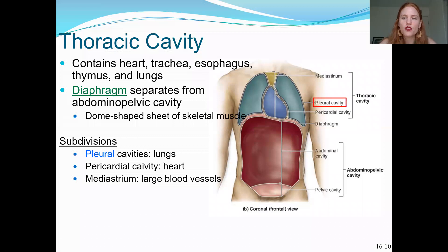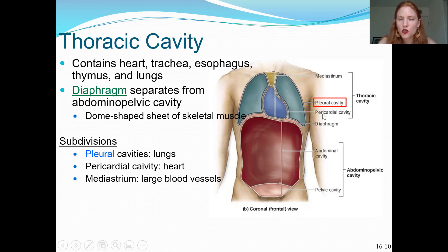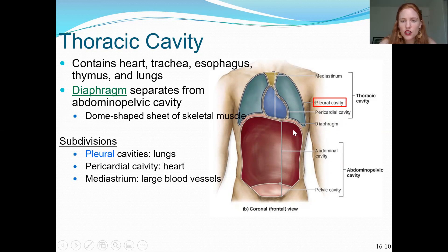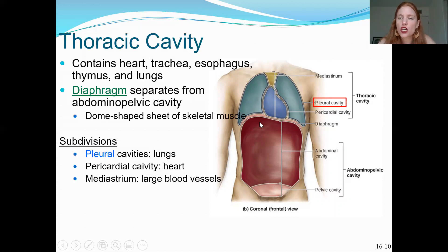All of the respiratory structures are located in the thoracic cavity, and the lungs are inside a subdivision called the pleural cavity. The division between the thoracic cavity and the abdominopelvic cavity is the diaphragm, which is also important for breathing — when it contracts it changes the volume in the thoracic cavity, which changes the pressure, and that's how ventilation or breathing happens.